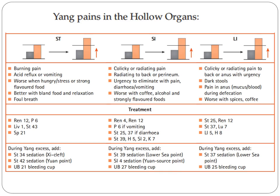Treatment in the case of stomach yang deficiency: REN12, Pericardium 6, Liver 1, Stomach 43, and Spleen 21.